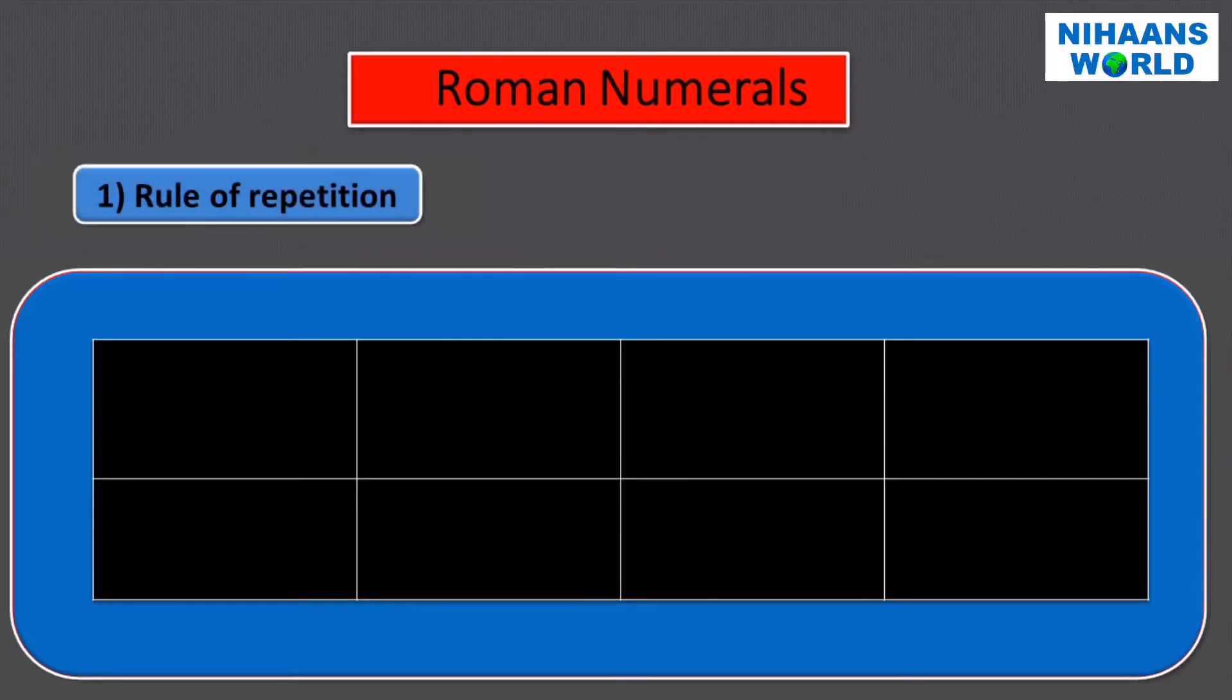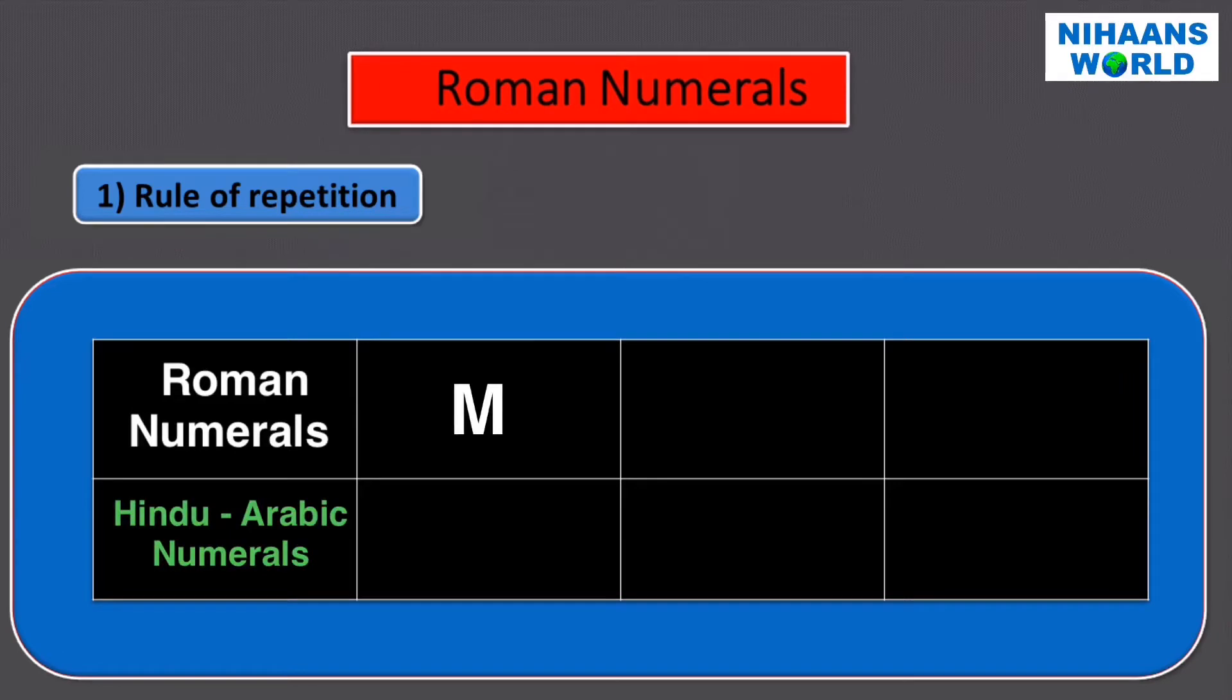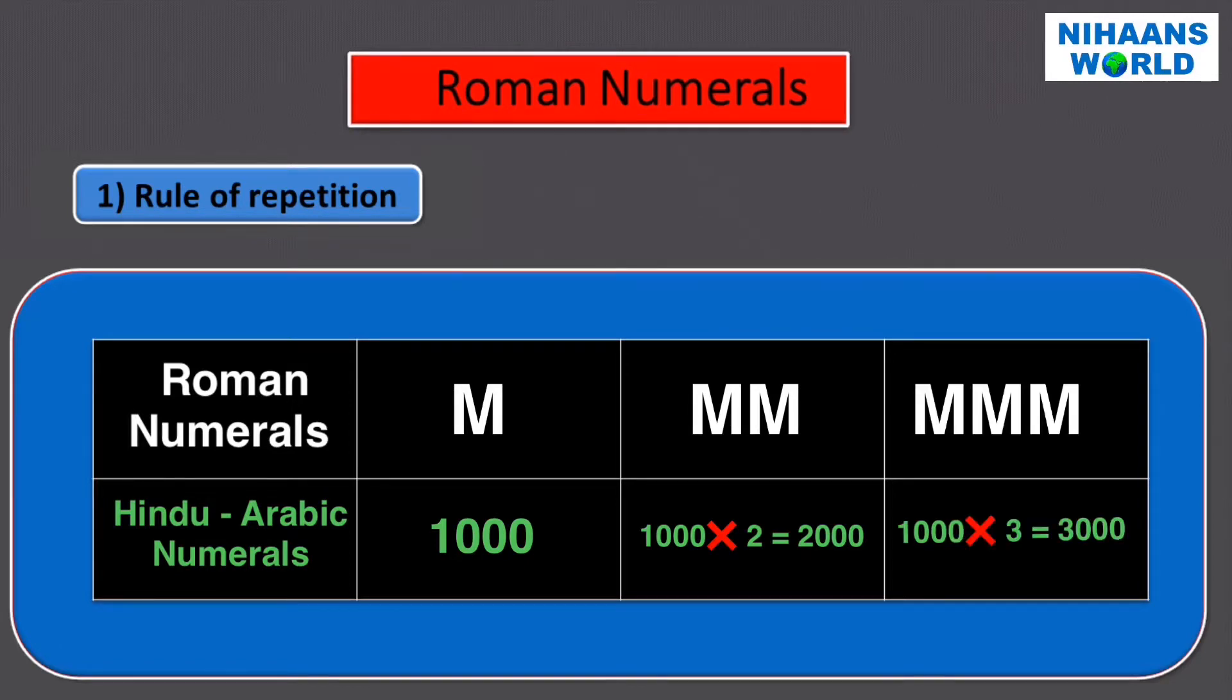When a symbol is repeated twice and thrice, its value is multiplied by two and three respectively. For example, M is equal to one thousand. M M is equal to one thousand multiplied by two, which is two thousand. M M M is equal to one thousand multiplied by three, which is three thousand.